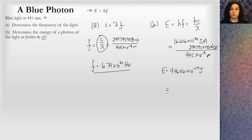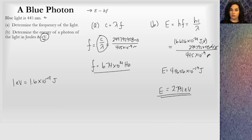If I want to convert this to electron volts, I know that 1 electron volt is 1.6 times 10 to the negative 19th joules. That's the basic charge, right? So I'll divide this by the basic charge, and I get 2.791 EVs. That's the energy of blue light with a wavelength of 445 nanometers. Pretty straightforward equation to use.